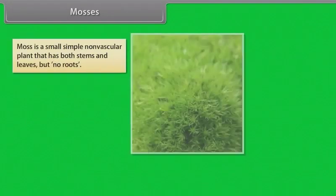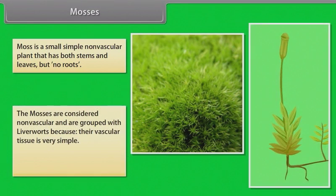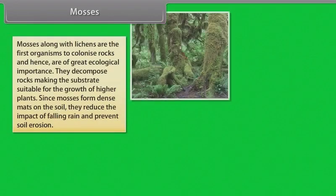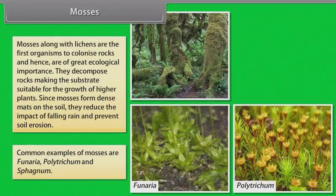Mosses is a small simple non-vascular plant that has both stems and leaves but no roots. The mosses are considered non-vascular and are grouped with liverworts because their vascular tissue is very simple. Both of them have similar life cycle. Mosses along with lichens are the first organisms to colonize rocks and hence are of great ecological importance. They decompose rocks making the substrate suitable for the growth of higher plants. Since mosses form dense mats on the soil, they reduce the impact of falling rain and prevent soil erosion. Common examples of mosses are funaria, polytrichum and sphagnum.